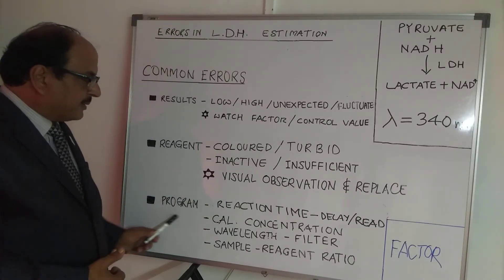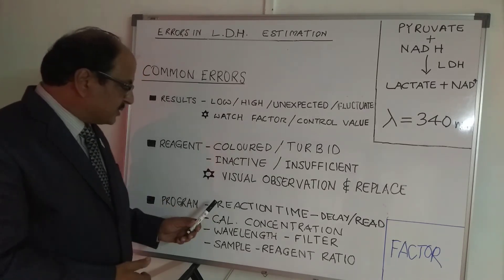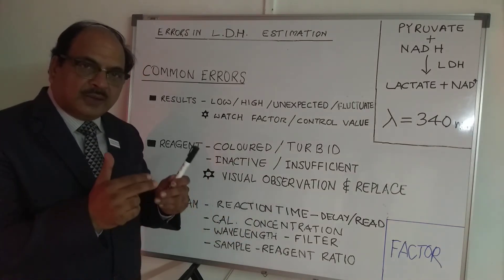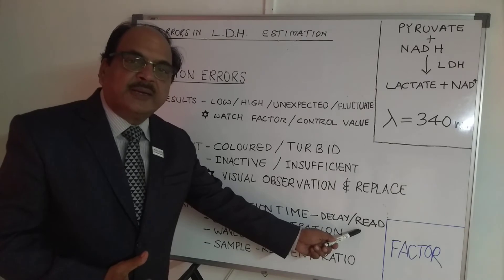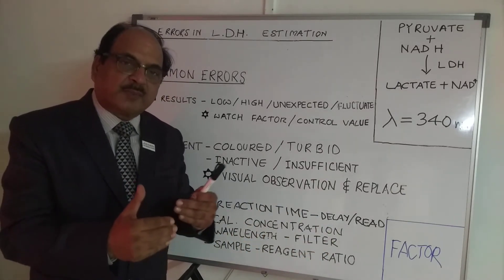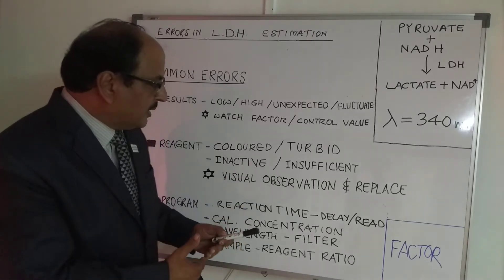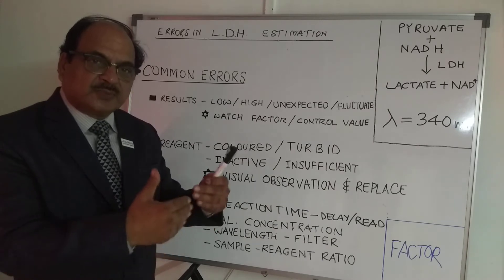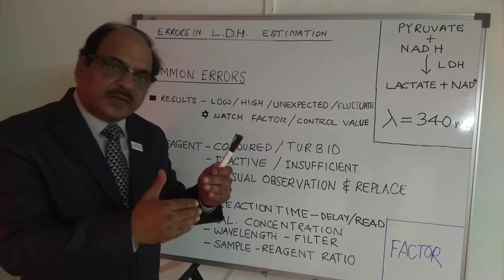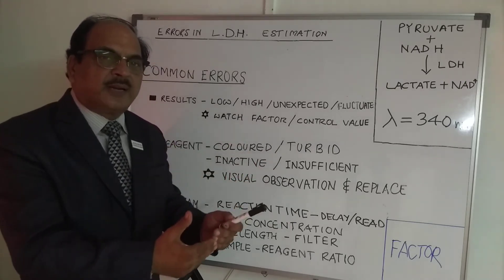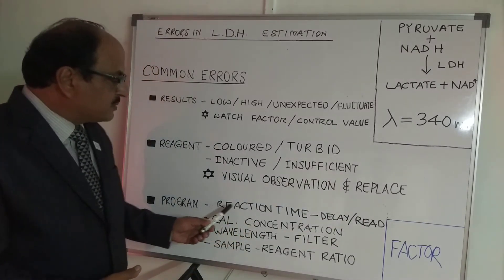The third category is program-related. Since this is kinetic chemistry, the reaction time is controlled by the program's delay time and read time. These figures are mentioned in the user manual or technical insert. If the recommended delay time is 60 seconds, ensure that it is followed. The instrument calculates delta OD per minute, so the recommended delay time must be strictly maintained.